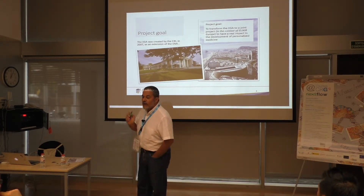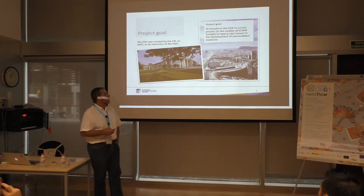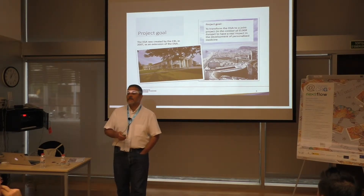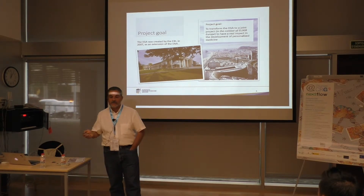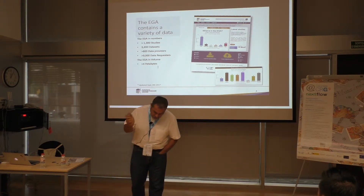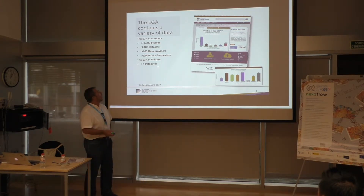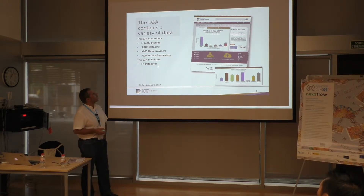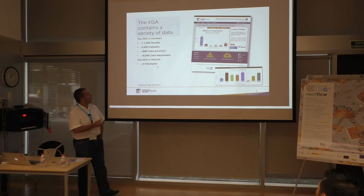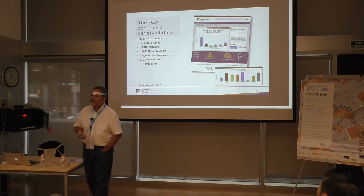The EGA is a project co-managed by the EBI, the European Bioinformatics Institute, and the CRG. In 2008 they started the project, and in 2013 we came on board and since then we are co-managing this team. The EGA has a big number of data: 1,300 studies, about 3,400 datasets, around 800 data providers, more than 10,000 data requesters, and now we are approaching 5 petabytes of size in our storage.